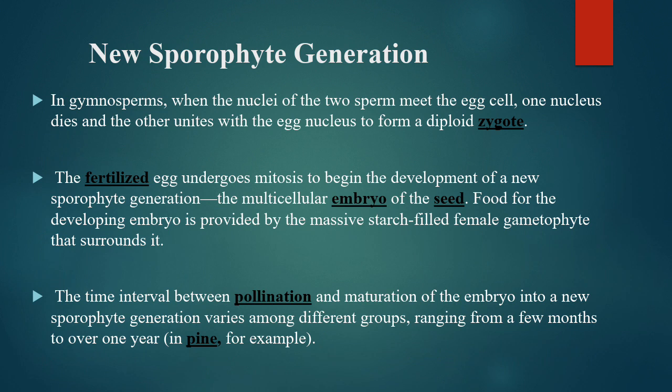New sporophyte generation: in gymnosperms, when the nuclei of two sperms meet the egg cell, one nucleus dies and the other unites with the egg nucleus to form a diploid zygote. The fertilized egg undergoes mitosis to begin the development of a new sporophytic generation — the multicellular embryo of the seed.